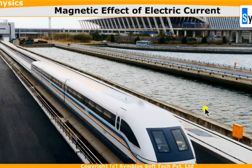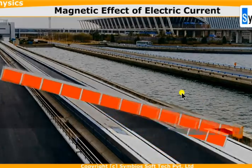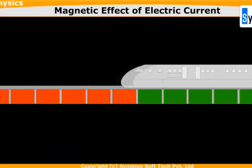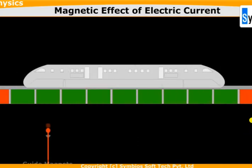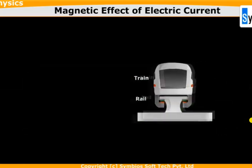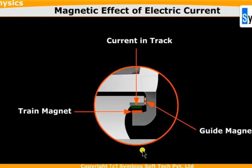The maglev train runs in Japan and is based on a magnetically levitated vehicle. It has guide magnets as a track, and the train actually levitates above the track because of repulsion between the lower base of the train and the track.